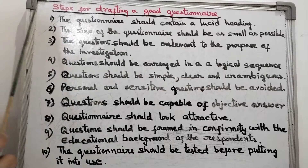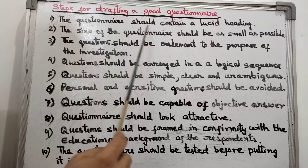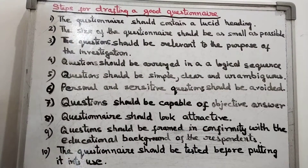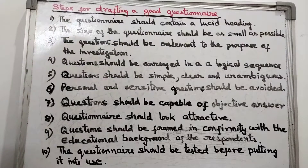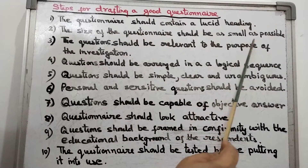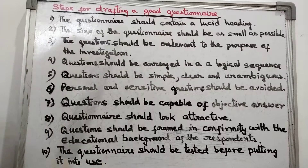The first point is that the questionnaire should contain a lucid heading — that means a clear-cut heading that contains the aim and objective of the survey. Next, the size of the questionnaire should be as small as possible; it should not be too lengthy. It should be as short as possible, otherwise it will be boring.